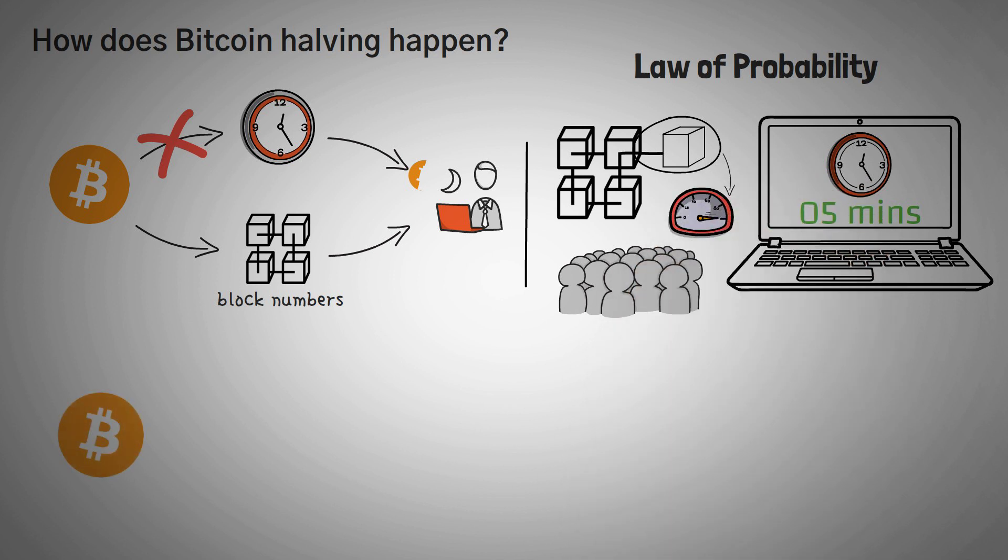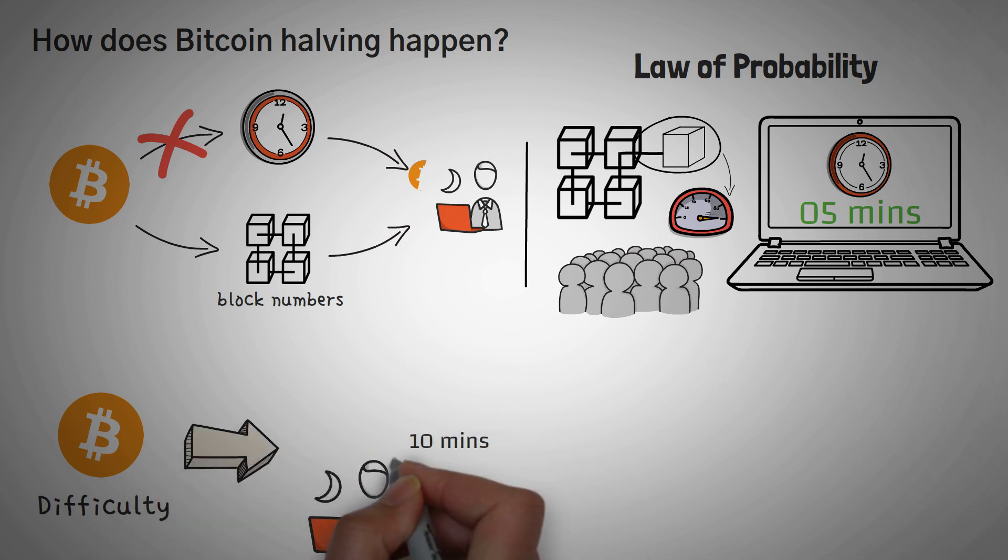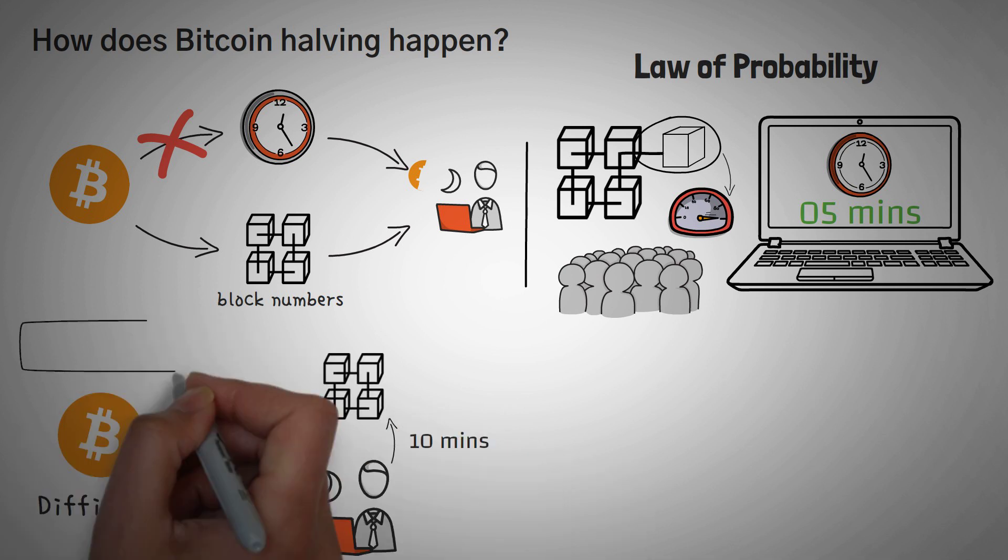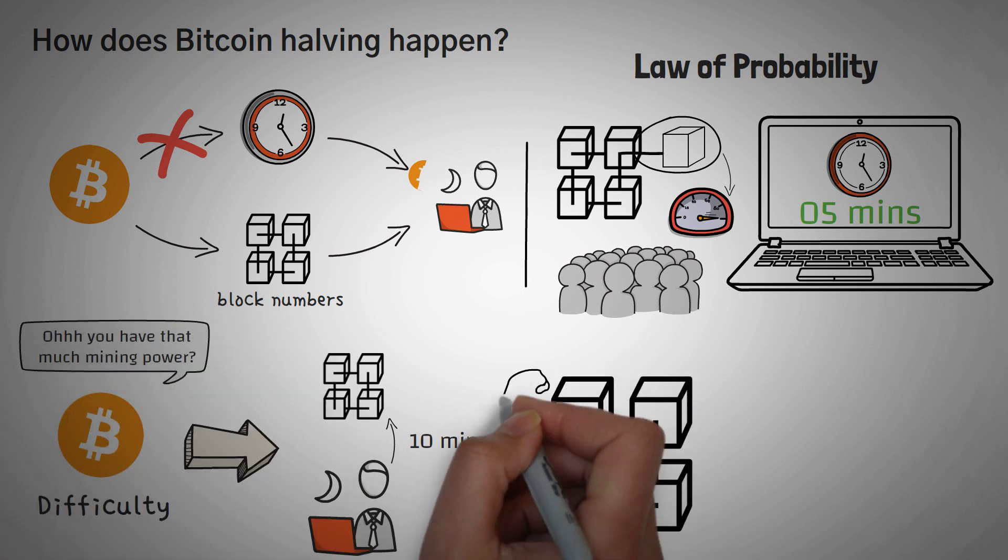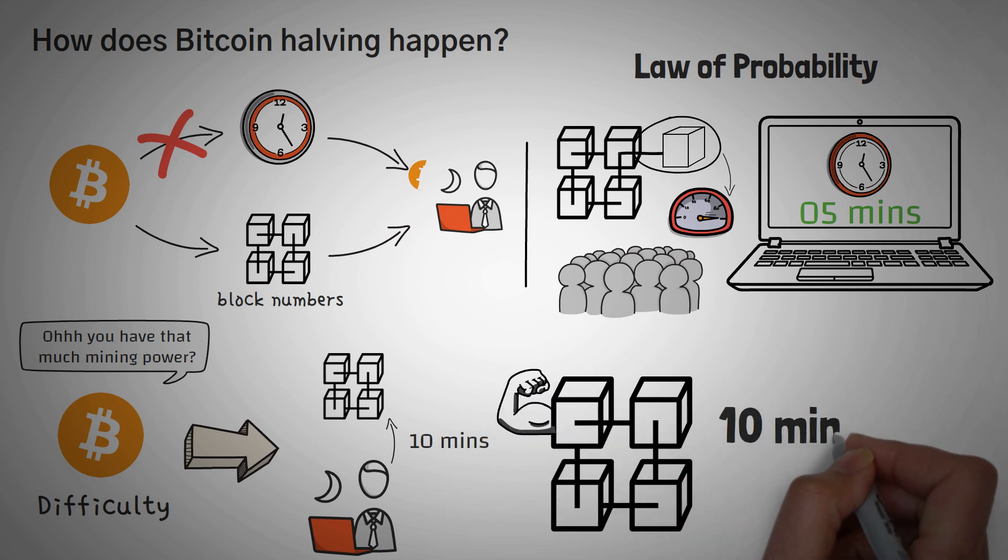Well, Bitcoin has something called a difficulty, and this is how it makes sure that on average, it takes 10 minutes to solve a block. It goes, oh, you have that much mining power? Well, statistically, with that much mining power, I'm going to make the problem harder, so that it takes exactly 10 minutes to solve the problem each time.